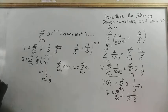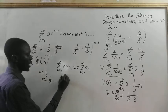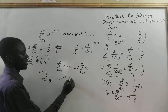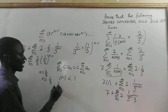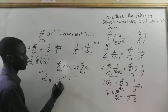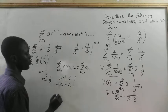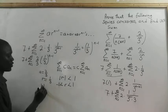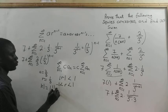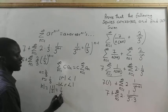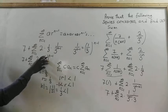For a geometric series, it converges if the absolute value of r is less than 1, or if the absolute value of r lies between negative 1 and positive 1. Here, we take the absolute value of r: the absolute value of 1/3, which equals 1/3. And 1/3 is less than 1, so this series converges.